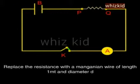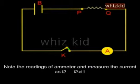Replace the resistance with a manganin wire of length 1 meter and diameter D. Note the readings of ammeter and measure the current as I2.